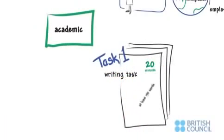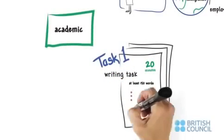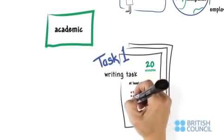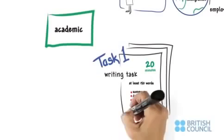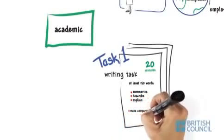In the academic module, there is a writing task of at least 150 words where you should summarize, describe, or explain a table, graph, or diagram. You might be expected to make comparisons, too.